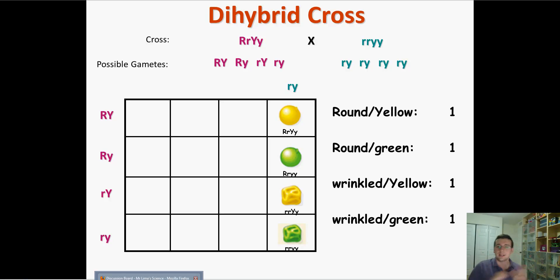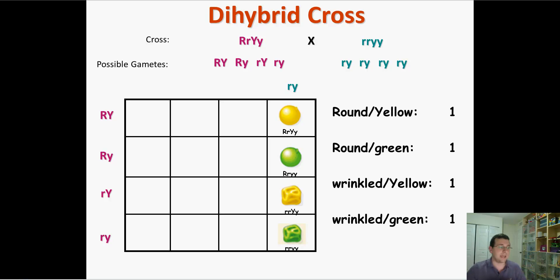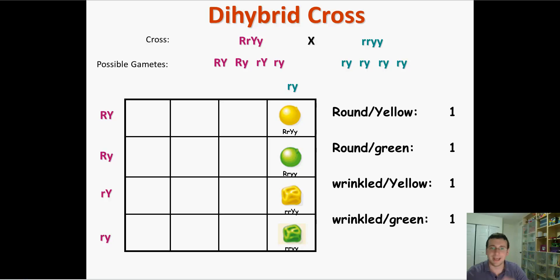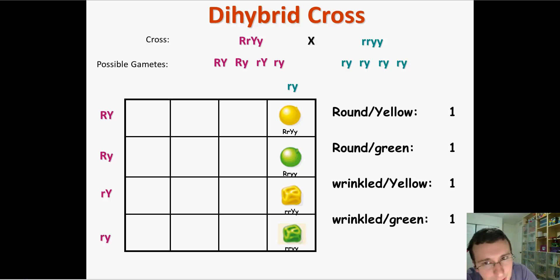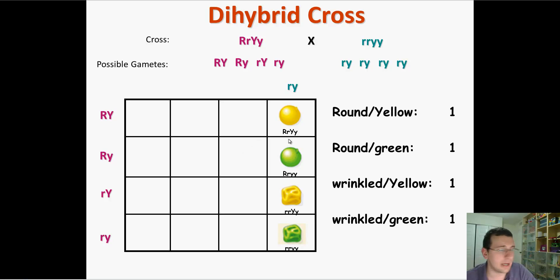That's how you set up and solve dihybrid crosses — they can be complex with a full grid, or simpler depending on the parents. In the next video I'll show that you don't ever need to draw a Punnett square at all. You just need to memorize the ratios for each type of cross and use probability rules instead. But before that, let's talk about why traits assort independently.